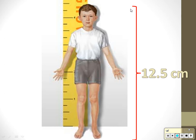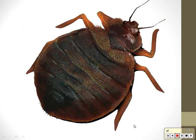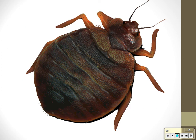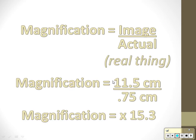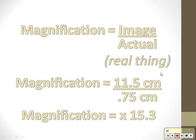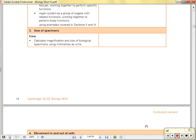Let's do one that's bigger. I measure a tick — it is 11.5 centimeters on the picture. Then I put the real thing on a ruler and it's 0.75 centimeters. Using the formula I get 15.3. That is much bigger than the real thing, so that makes sense.